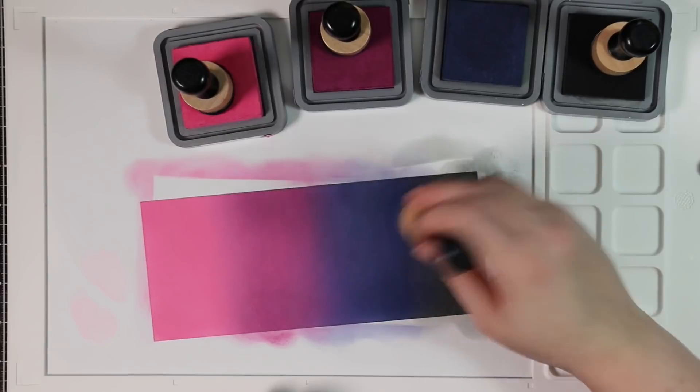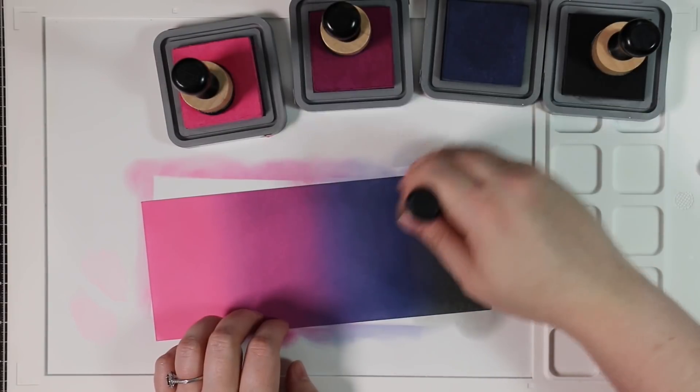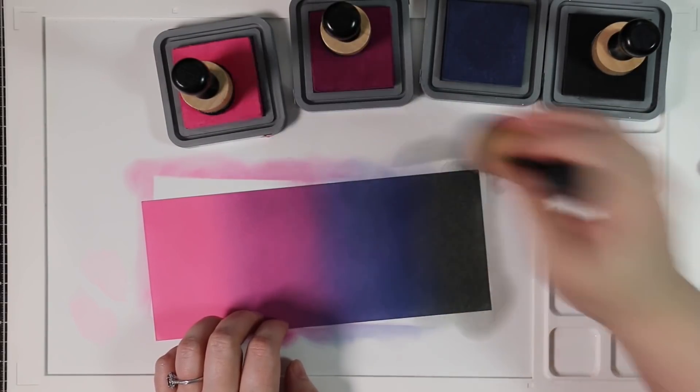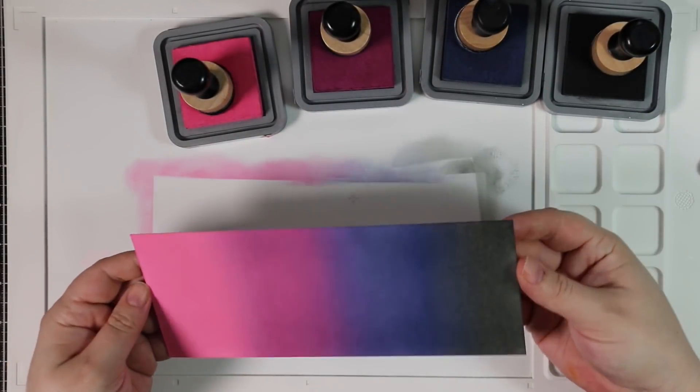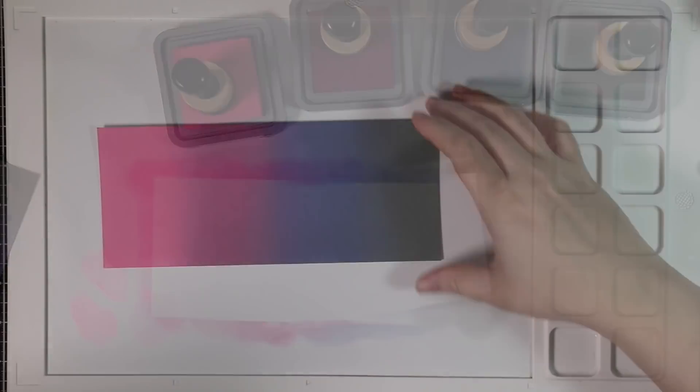I don't know why it does that. I find that so odd because I'll literally look at the monitor of my camera while I'm blending and it looks completely different on camera than it does in real life. It's weird, but you guys see it in the end pictures and all that stuff. It looks fine.